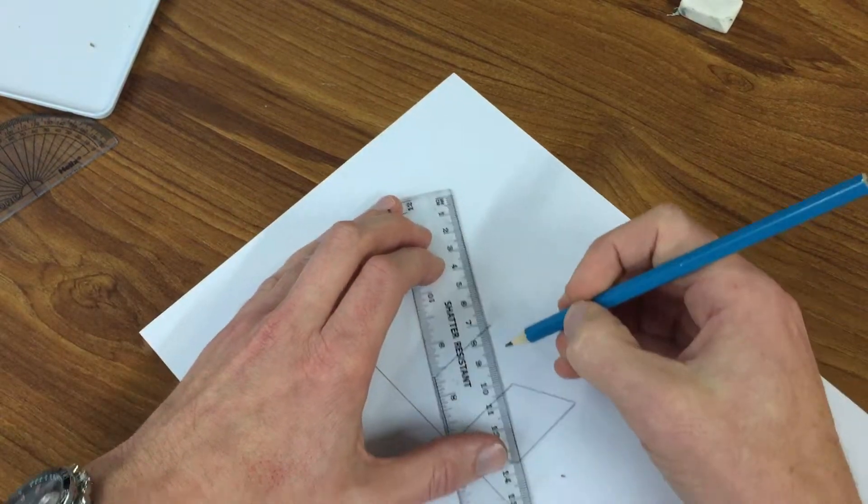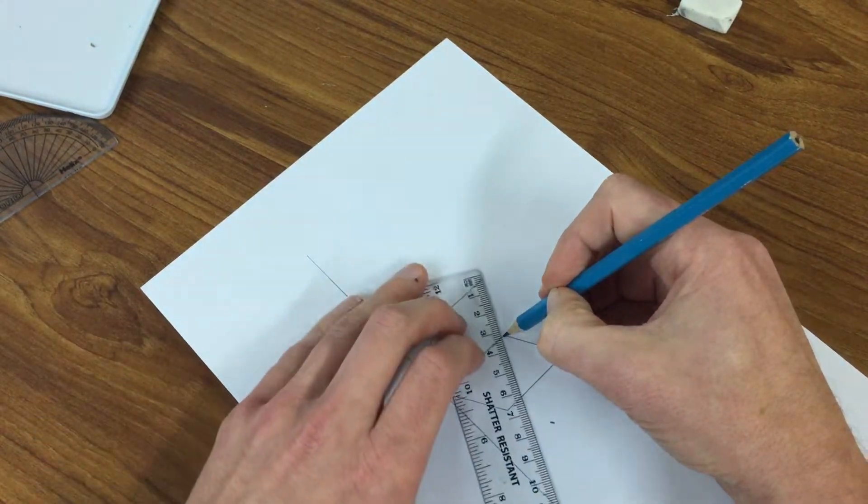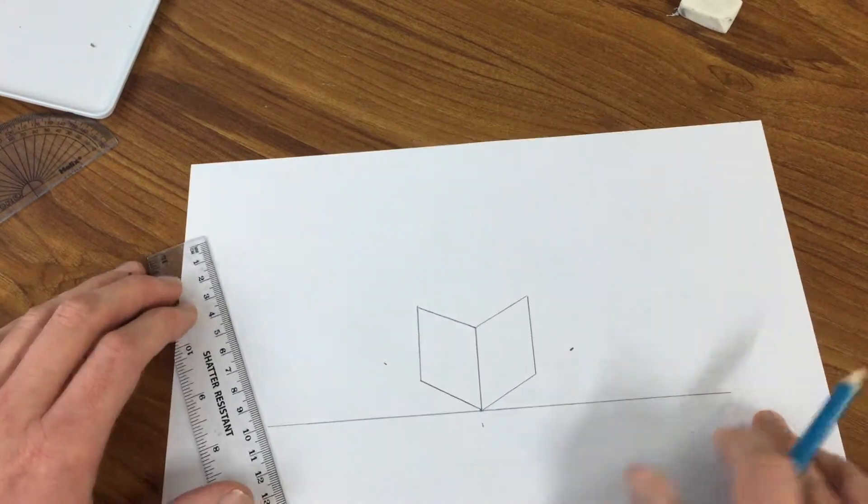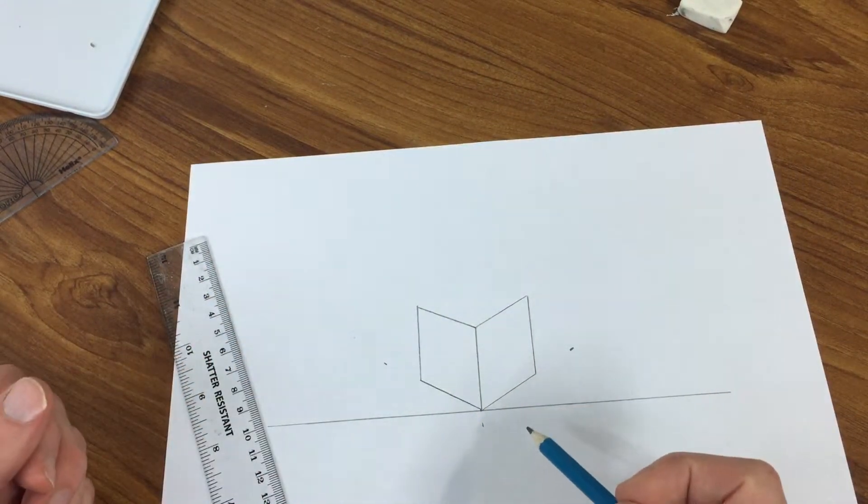38. If you connect them up, those lengths should be 31. If I double check - yeah it's about 31. Now you've got like an open book looking image.